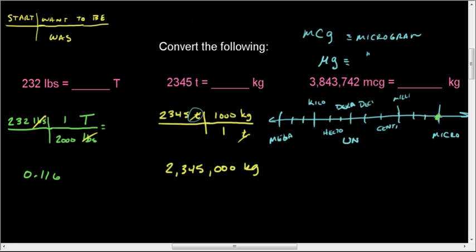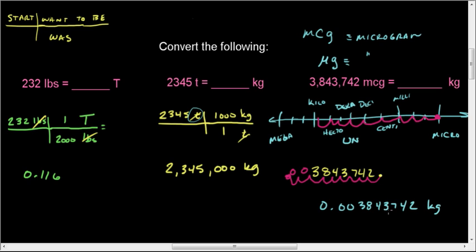So to do this conversion, we're converting within the metric system. What we're going to do is we start where we are, and we're going to move it over to kilograms, counting the number of steps that we go. One, two, three, four, five, six, seven, eight, nine. And so that tells us that if we take 3,843,742 decimal point, if we take that decimal point and we move it over nine spots to the left, we'll have kilograms. One, two, three, four, five, six, seven, eight, nine. There's the decimal point. Any blank spaces get zeros. And so now I have the answer 0.003843742 kilograms. And we just converted from micrograms to kilograms.